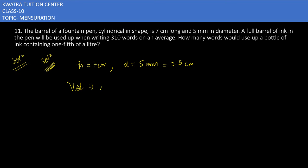Volume will be πr²h. It is 22/7 × r². The radius is half of 0.5, so 0.5/2. Put 0.5/2 twice and then multiply it with 7.